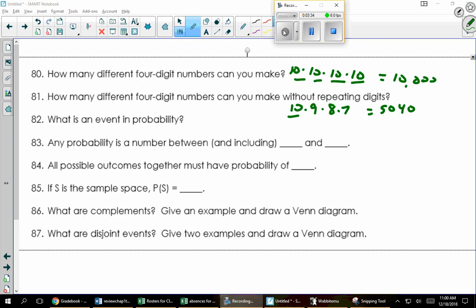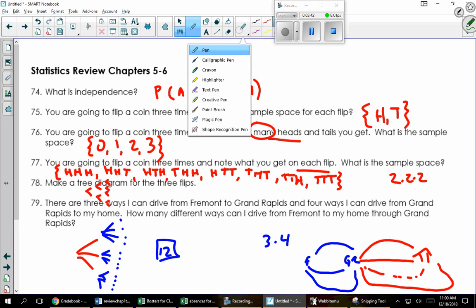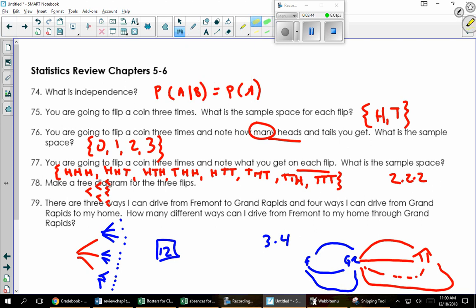So back when we talked about flipping a coin, we could talk about the event of getting two heads, which would be any of these cases. It could be an event, or it could be one of those individually, just any of the subset of that sample space.